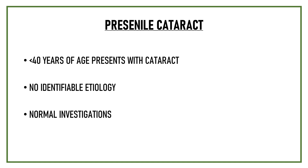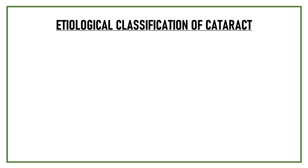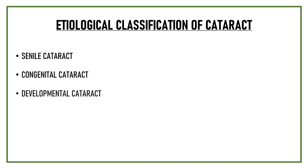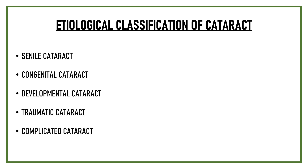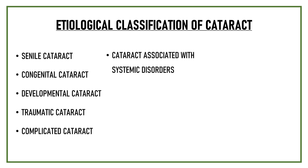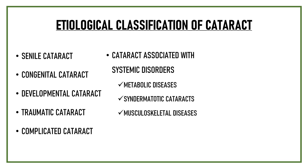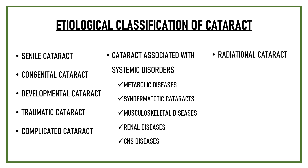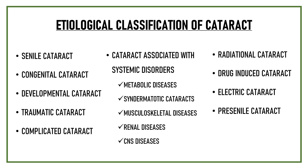To summarize the different etiologies of cataract: senile cataract, congenital cataract, developmental cataract, traumatic cataract, complicated cataract, cataract associated with systemic disorders (metabolic diseases, syndermatotic cataracts, musculoskeletal diseases, renal diseases, CNS diseases), radiational cataract, drug-induced cataract, electric cataract, and presenile cataract.